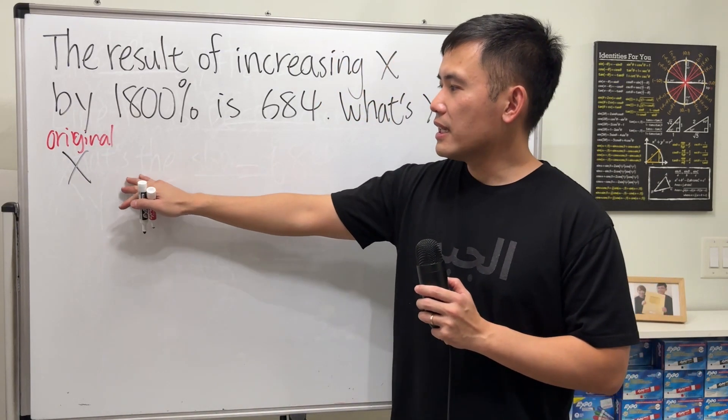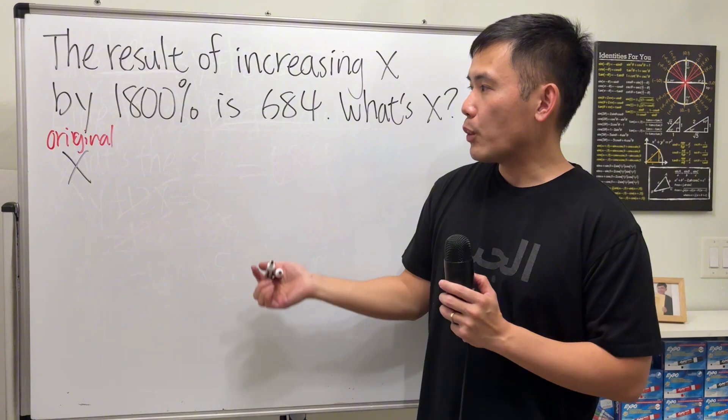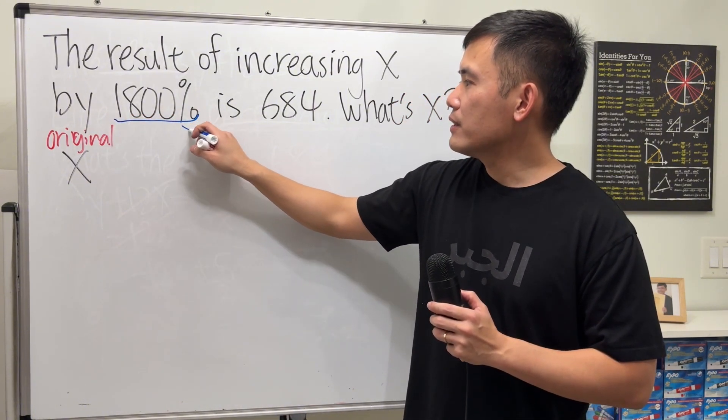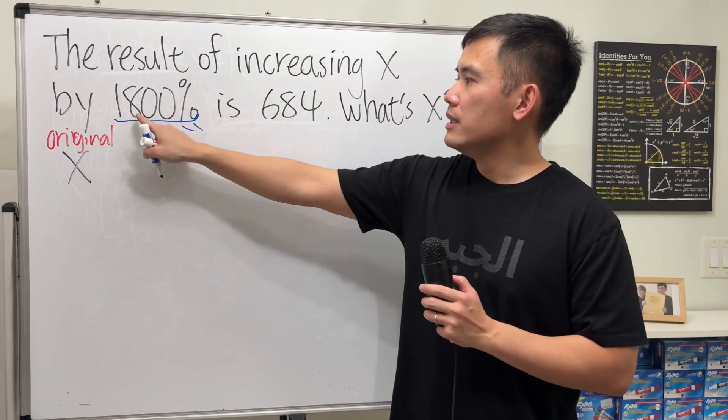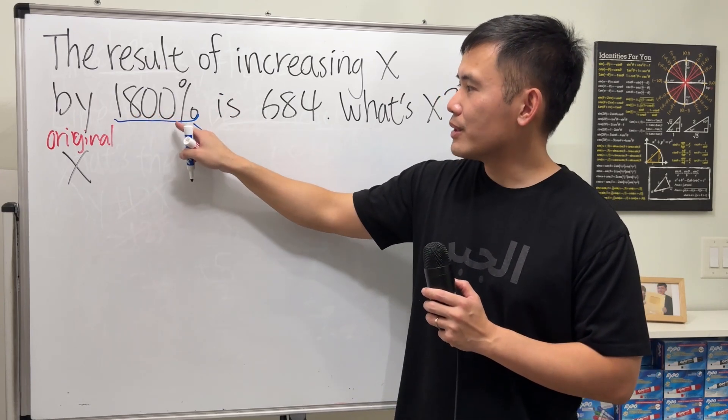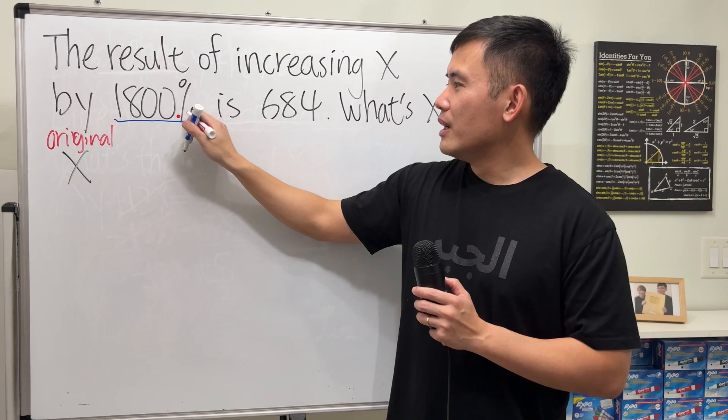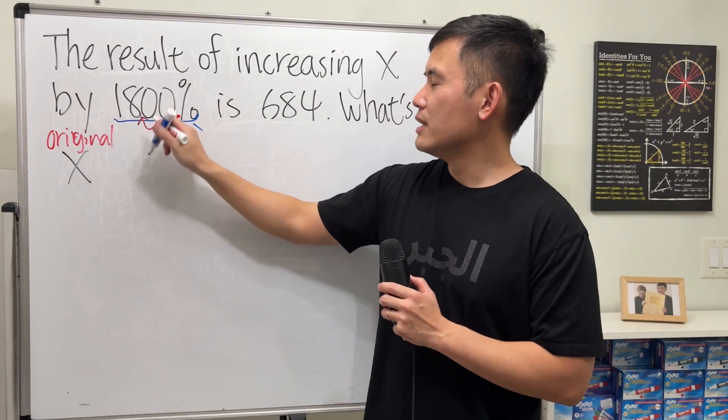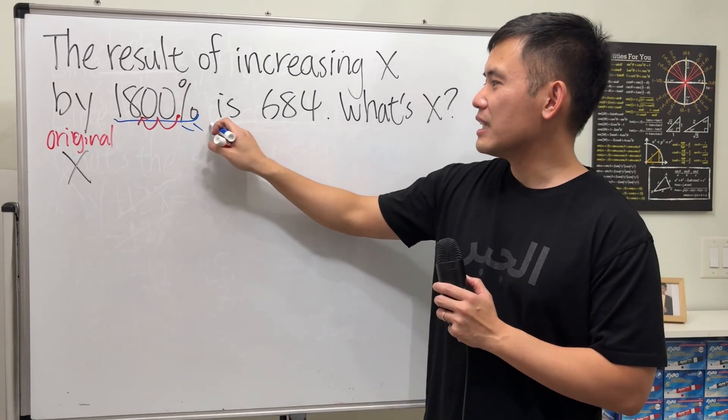Now, there is some increment, right? By what though? Well, it says 1800%. Firstly, change that to a decimal. This right here is 1800. So the decimal point is right here. If you change the percent to a decimal, you move the decimal point twice to the left. So 1800%, it's the same as 18.